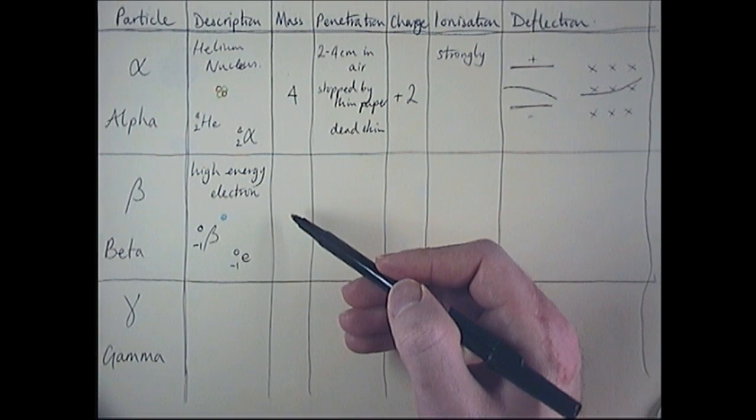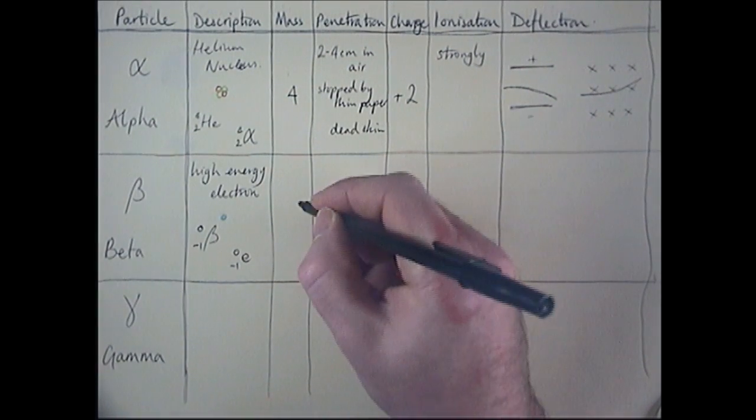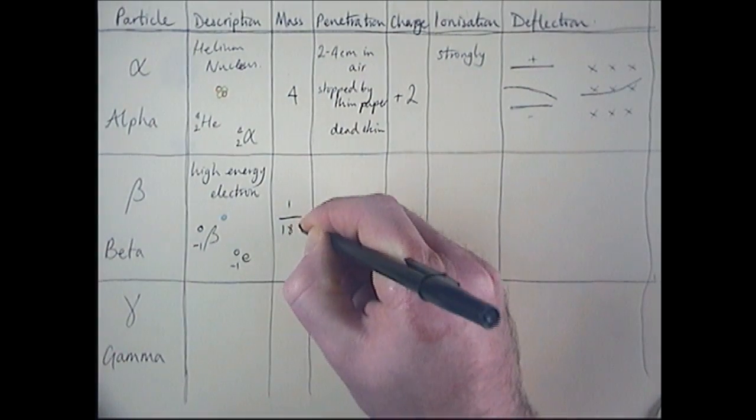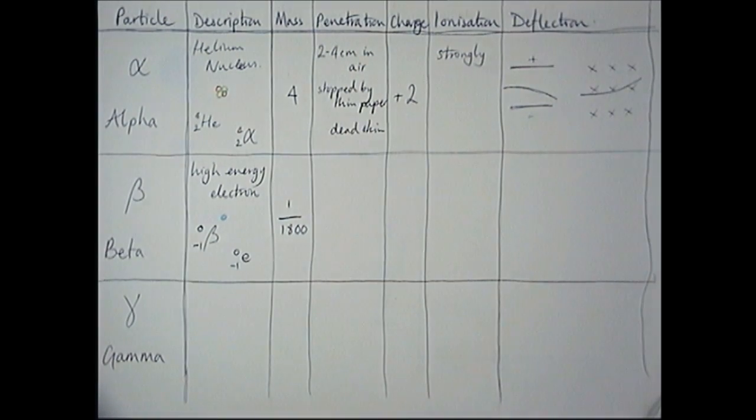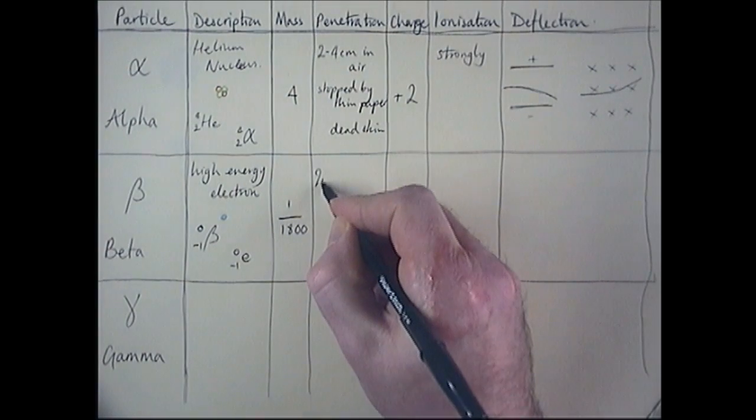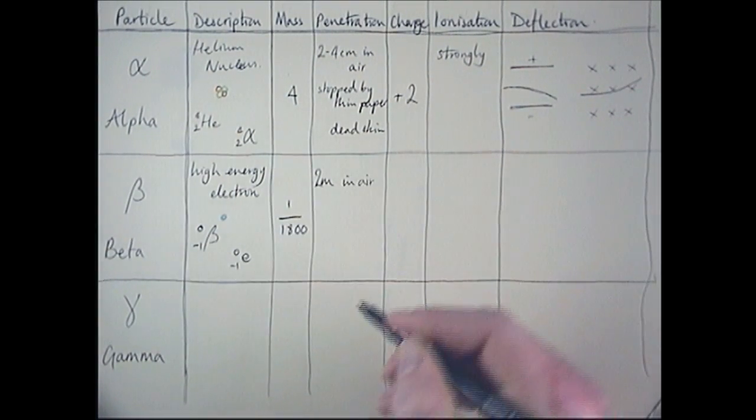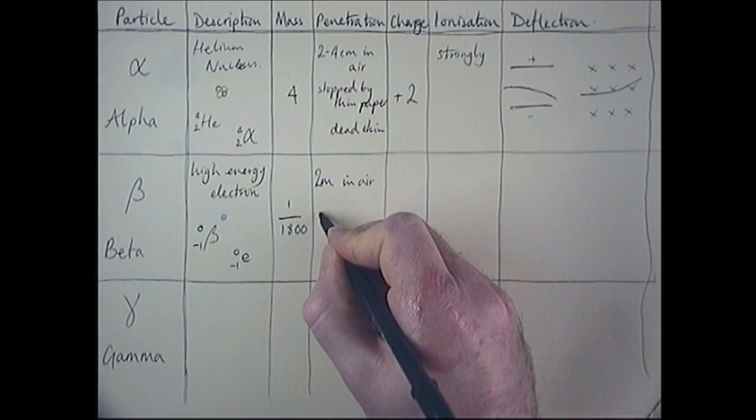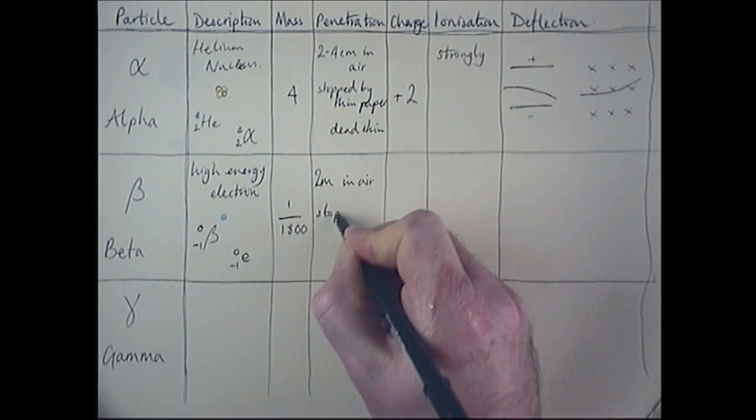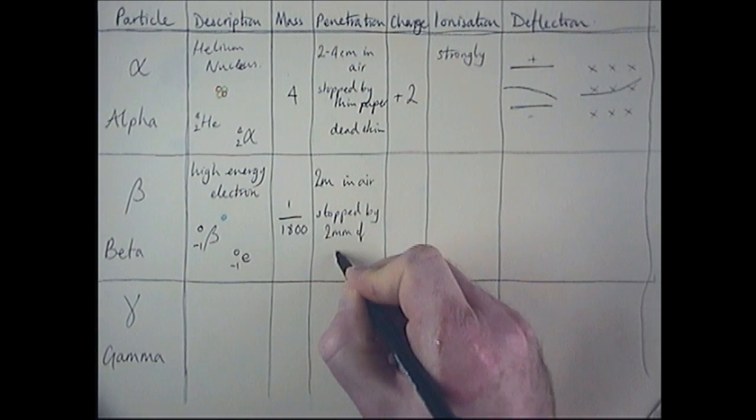Its mass. A lot of textbooks or people will say, especially in chemistry, will tell you that the electron has no mass. But it does have mass. It has one-eighteen-hundredth of one relative atomic mass. So it doesn't have very much at all, but there is a little bit of mass there. Its penetration, it will travel about two meters in air. We can stop it with about two millimeters of aluminum.